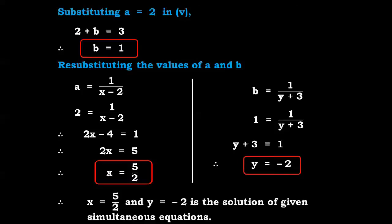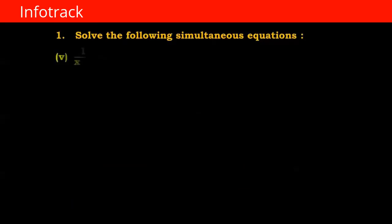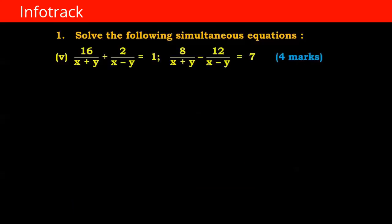For b: b equals 1 upon (y plus 3), substituting b equals 1: 1 equals 1 upon (y plus 3), so y plus 3 equals 1, therefore y equals 1 minus 3, giving y equals minus 2. So x equals 5 upon 2 and y equals minus 2 is the solution of the given simultaneous equation.